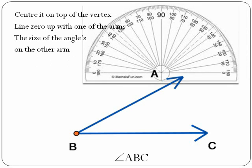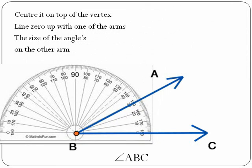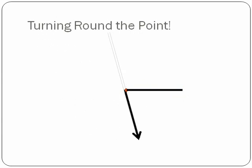Center it on top of the vertex. Line zero up with one of the arms. The size of the angle is on the other arm. Turning round the point.